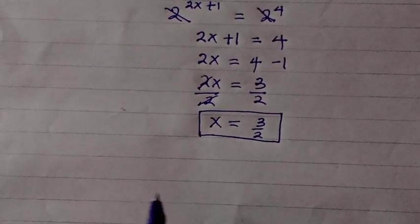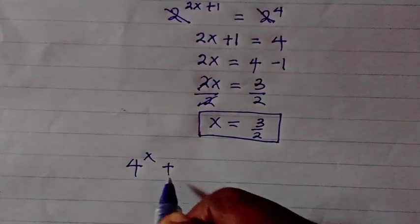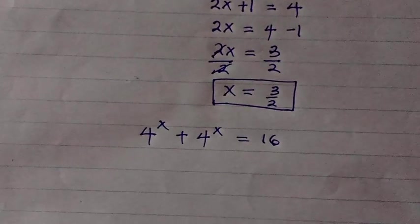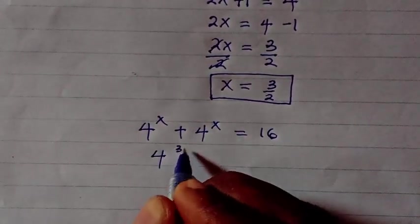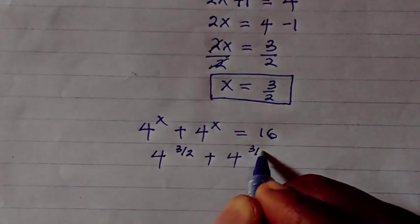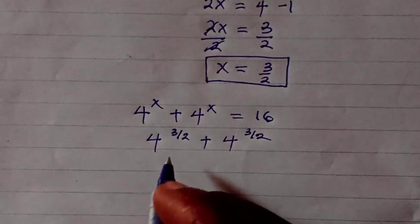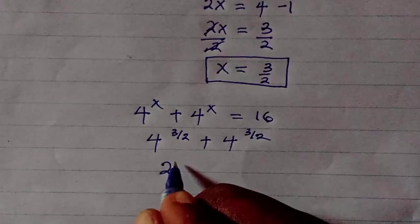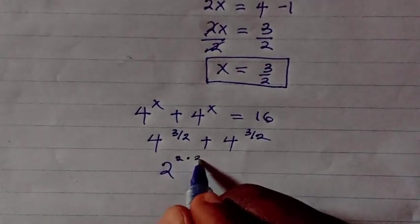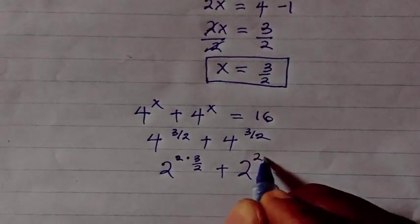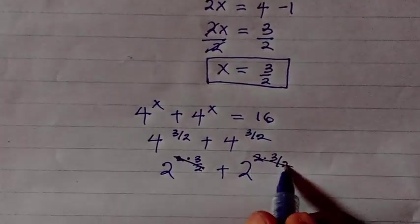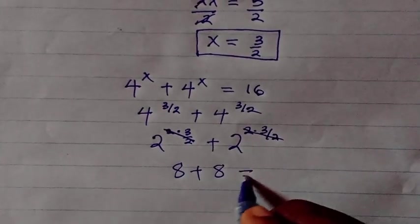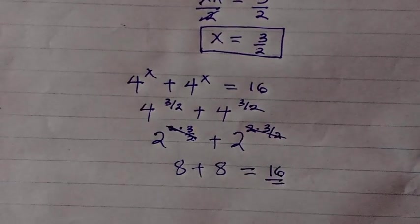To verify, at x equals 3 over 2 we substitute into the left-hand side: 4 to the power of 3 over 2, plus 4 to the power of 3 over 2. Writing 4 as 2 squared, we get 2 squared to the power of 3 over 2, plus 2 squared to the power of 3 over 2. The 2s cancel, giving 2 to the power of 3 plus 2 to the power of 3, which is 8 plus 8 equals 16. This confirms our answer. Thanks for watching.